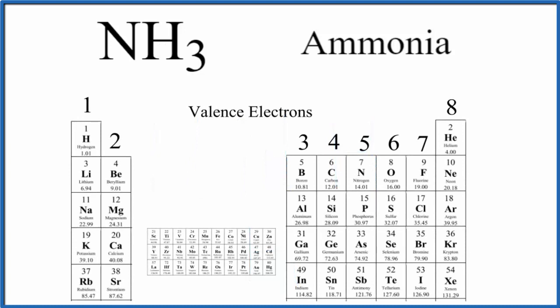Here we have the periodic table kind of shrunk down to show us the valence electrons. Group one, these all have one. Group two, these all have two valence electrons. We skip the transition metals. Three, four. And here's nitrogen in group 15, sometimes called 5A. It has five valence electrons.